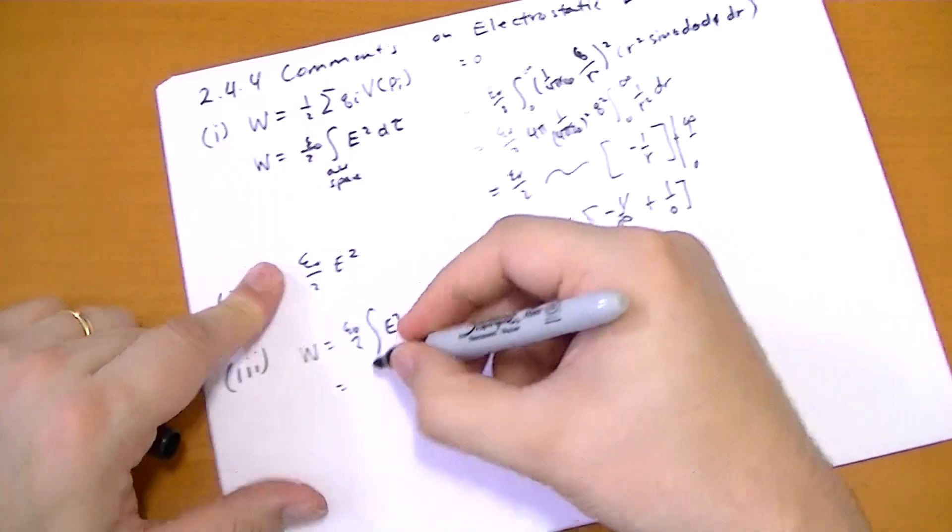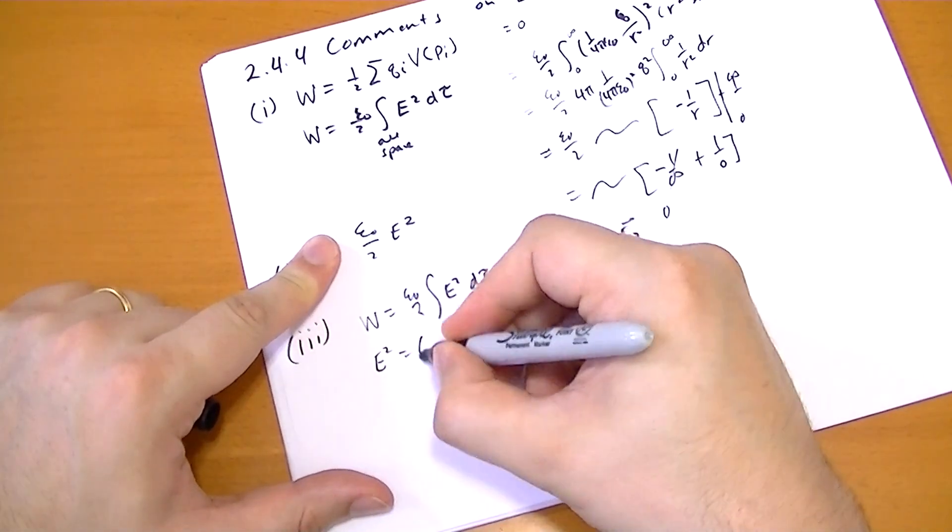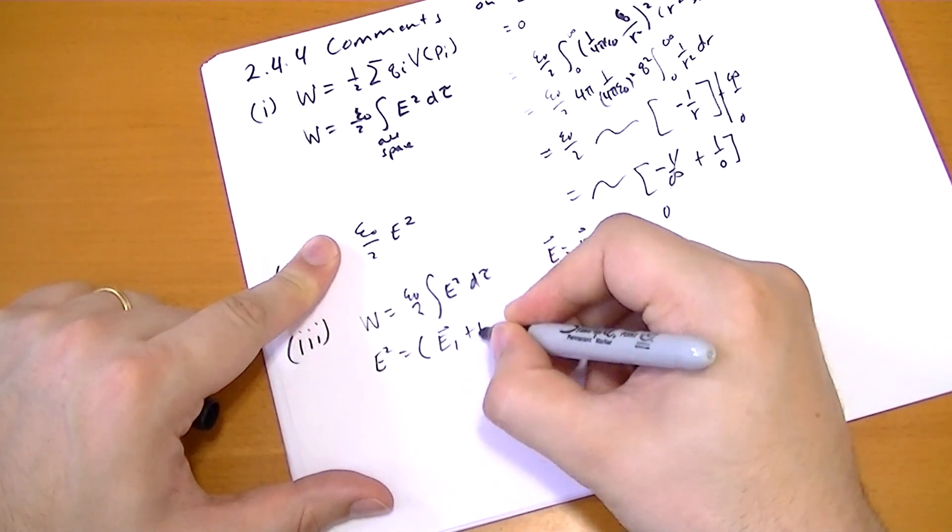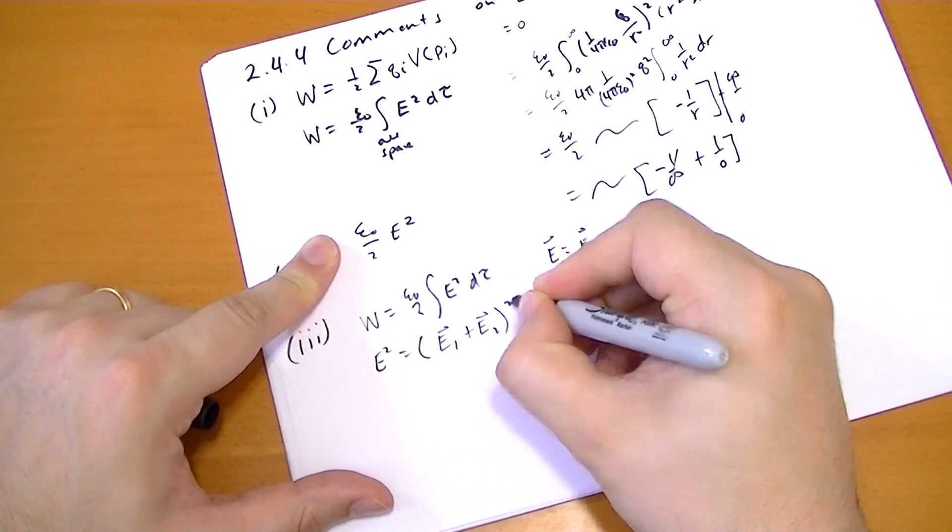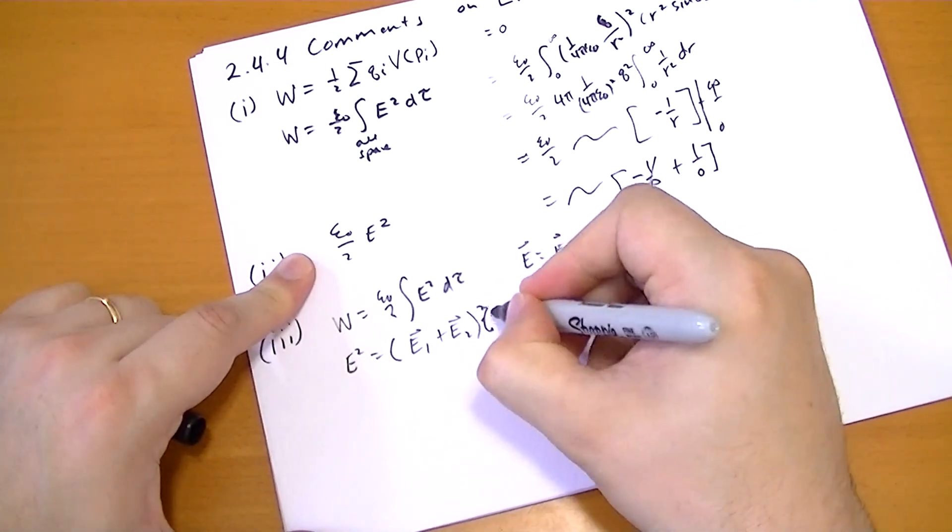Well, what's e squared? So e squared is equal to electric field 1 plus electric field 2 squared. Or rather, it's the dot product with itself.